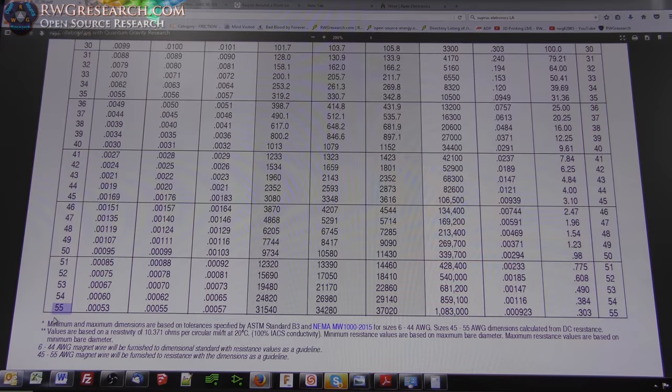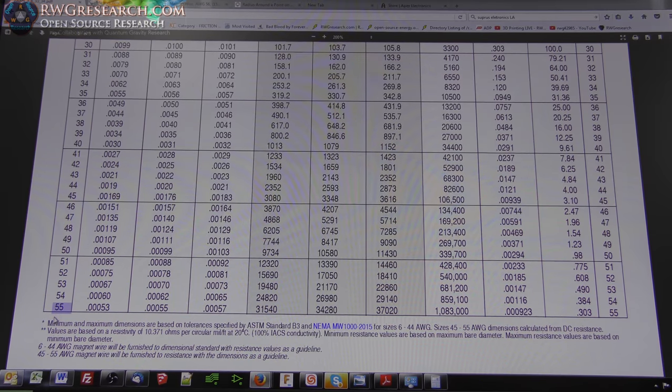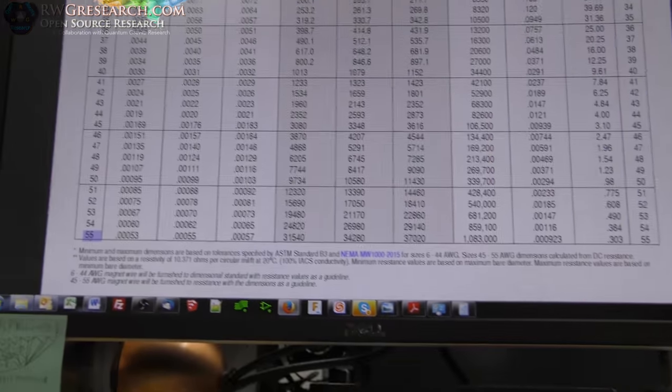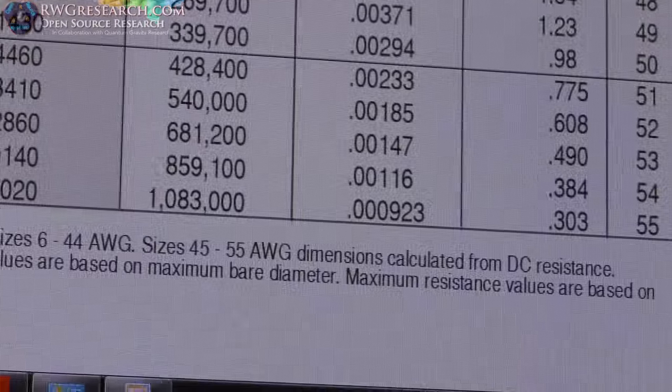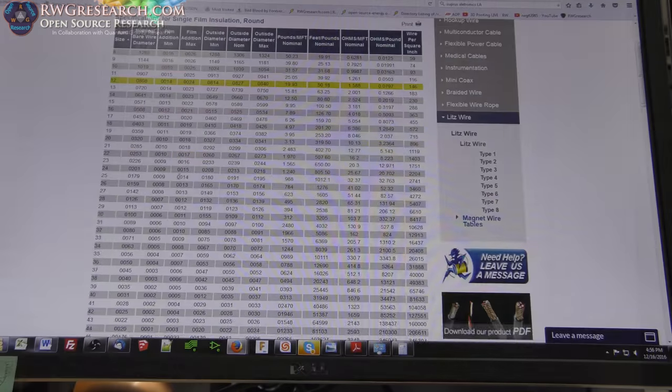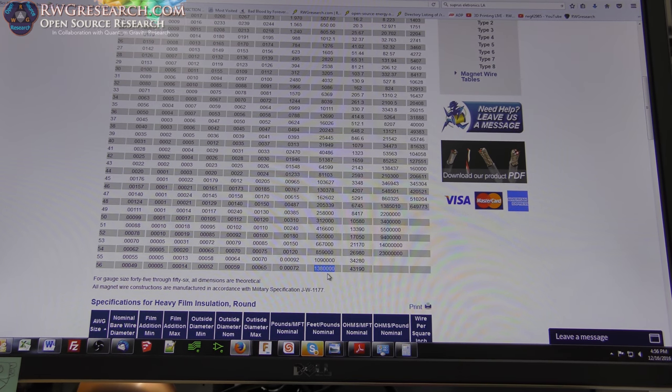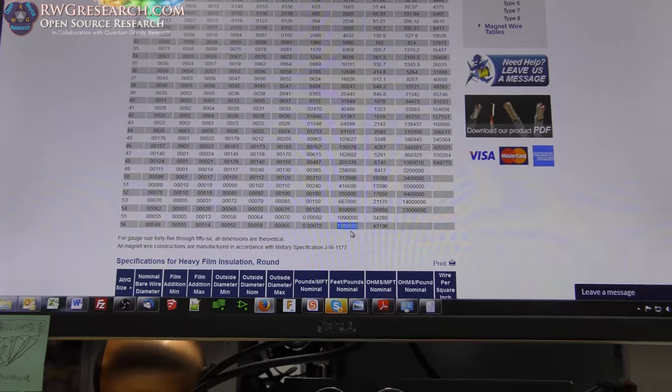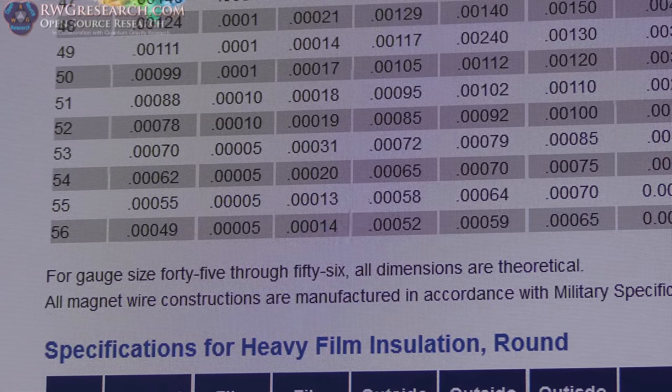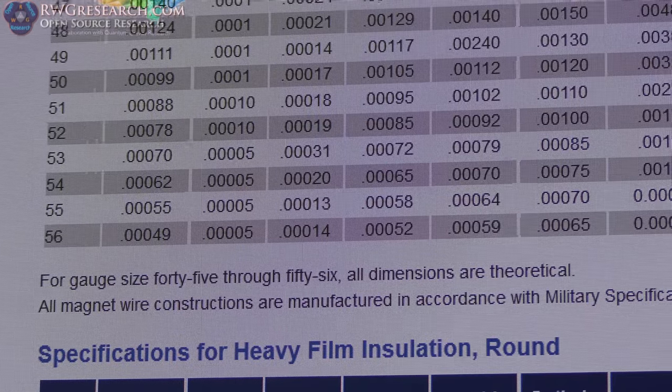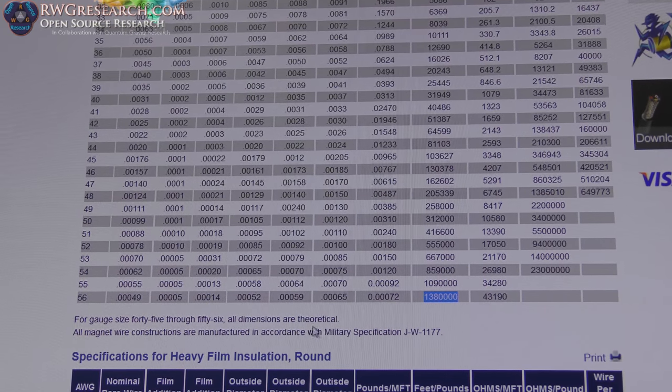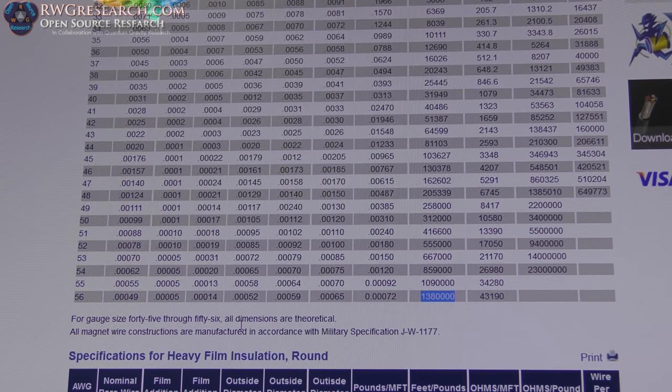I got online and found a couple manufacturers who make this stuff. Apparently this company only makes it down to 55 AWG, and it specifies right here that sizes 45 through 55 AWG are calculated from DC resistance. Cooper Wire here seems to make 56 AWG. It's 1,380,000 feet per pound. And look at this, gauge size 45 through 56, all dimensions are theoretical. That's just crazy, that's just bonkers right there. They have to measure it by DC resistance, but that is freaking nuts.